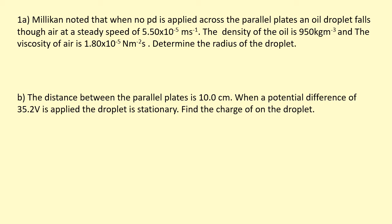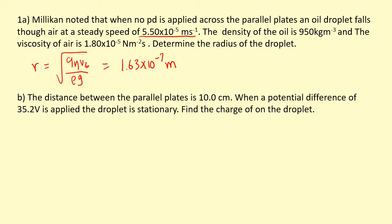Millikan noted that when no potential difference is applied, the oil droplet falls at a steady terminal speed. Using the given density and viscosity — this is the same example question from the last video — we showed that using r = √(9ηv_t / ρg), we get a radius of 1.63 × 10⁻⁷ metres. This helps us determine the mass of that particular oil droplet, since each droplet will have a different mass depending on how it came out of the atomizer. The distance between the plates is 10 centimetres.